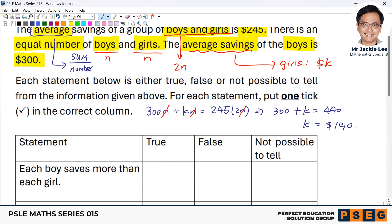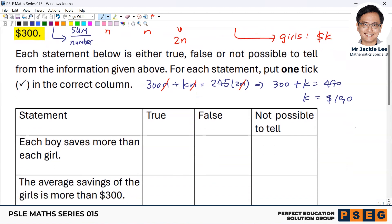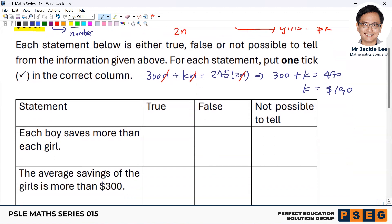Okay. For the boys, the average is higher. But this one doesn't mean that for each boy, the saving will be more than the girls. Make sure that you have a clear concept on this. So by right, the answers for this one should be not possible to tell. Can be yes, can be no.